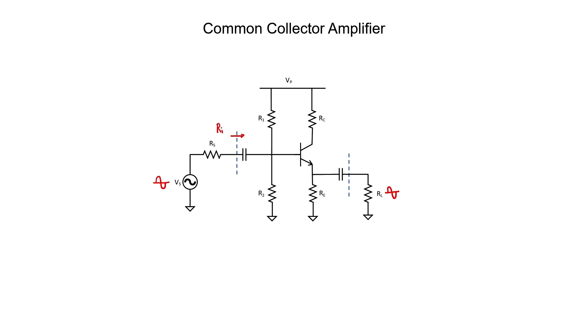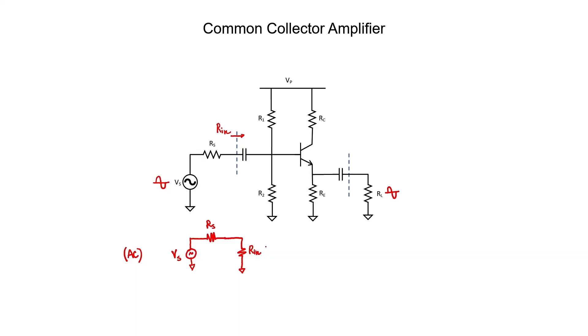Our amplifier is going to have some input impedance. From the perspective of the AC signal, we won't see the capacitor — we'll only see this voltage divider. If the input impedance Rin is large relative to Rs, then the voltage drop across Rs might be negligible. That's what we want: an amplifier with a high input impedance so that the signal doesn't drop. It's thus advantageous to make R1 and R2 as large as possible.